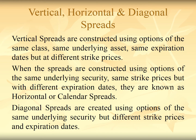Vertical spreads are constructed using options of the same class, same underlying asset, same expiration date, but different strike prices. When spreads are constructed using options of the same underlying security, same strike prices but with different expiration dates, they are known as horizontal or calendar spreads. Diagonal spreads are created using options of the same underlying security but with different strike prices and expiration dates.